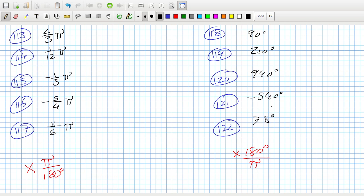Then 180, that's 90 degrees. Then the next one, just to be clear, it's 7/6π times 180 over π, so that's 210 degrees. And then the next one worked out to be 990 degrees, and then the next one worked out to be -540 degrees, and then the next one worked out to be 75 degrees.